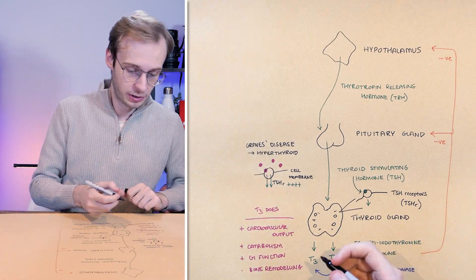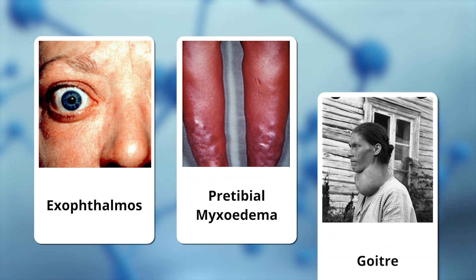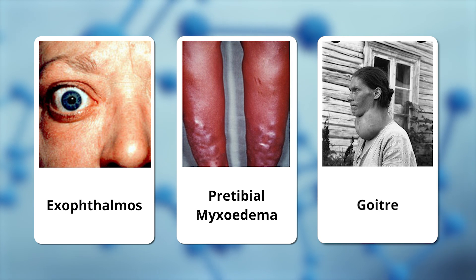with some really key clinical signs that it's important to be able to recognize, including exophthalmos, pre-tibial myxedema, and the goiter in the neck from those swollen, hyperactive thyroid tissues.